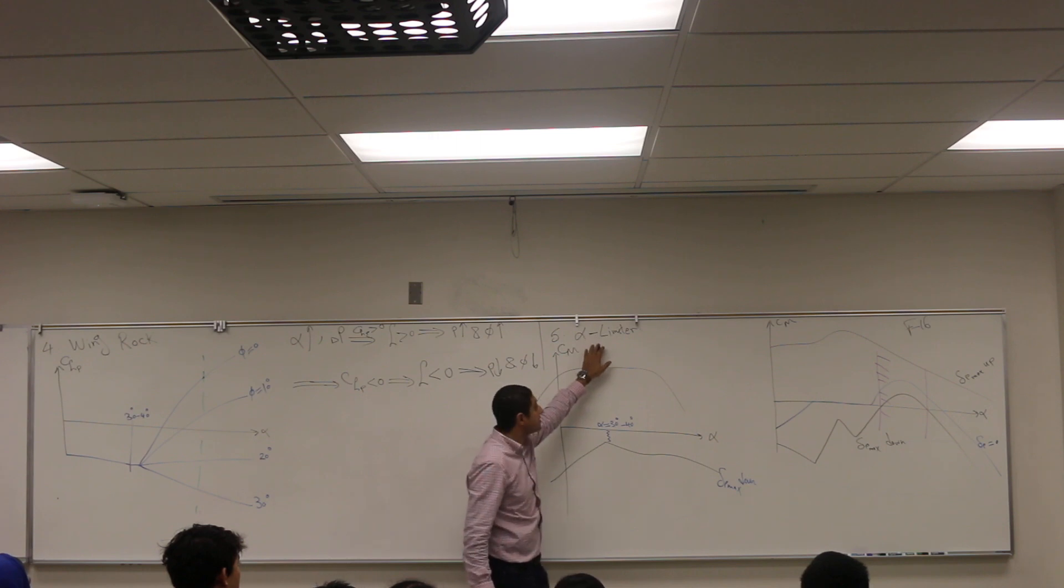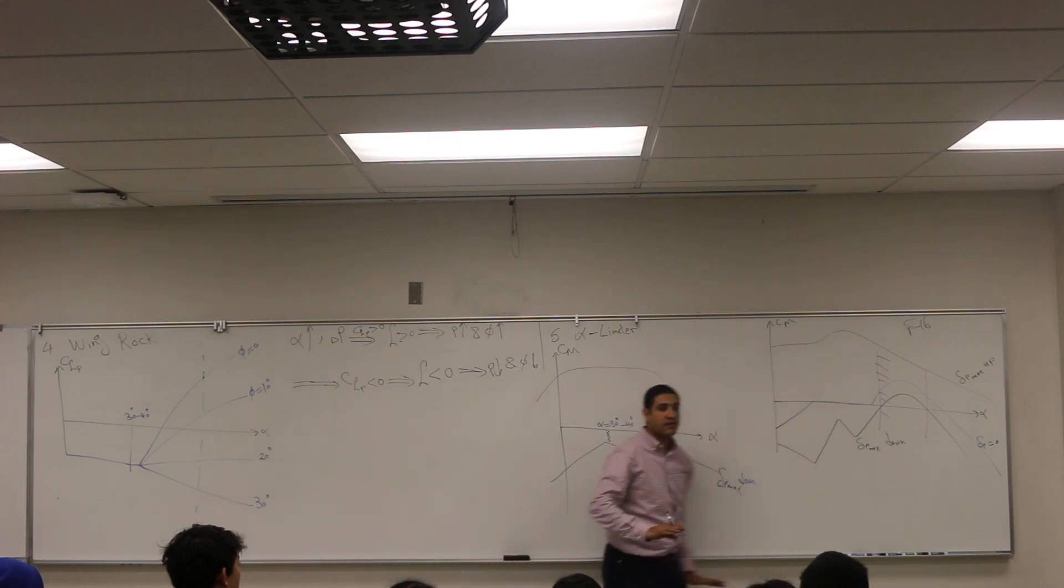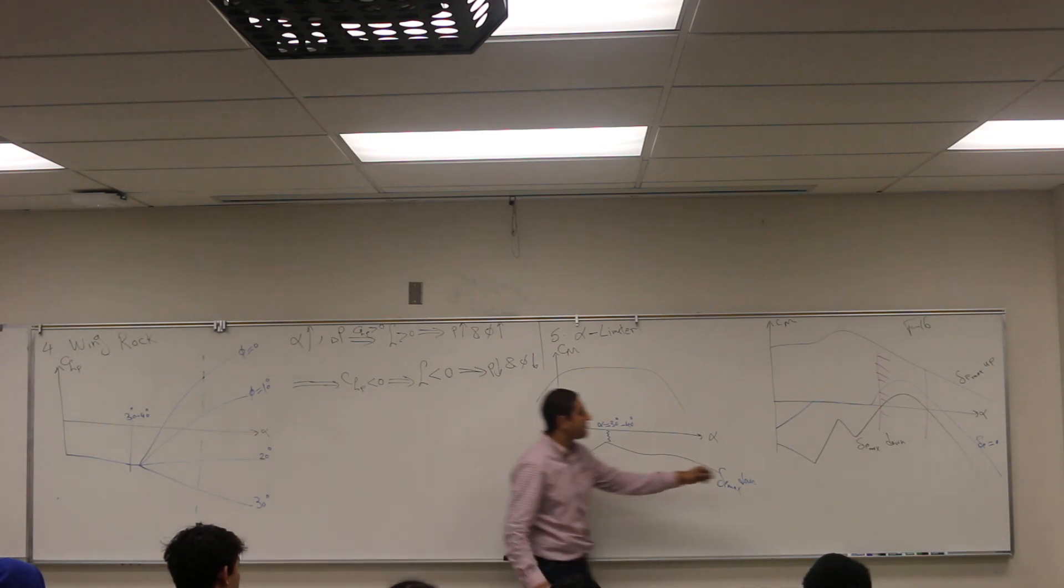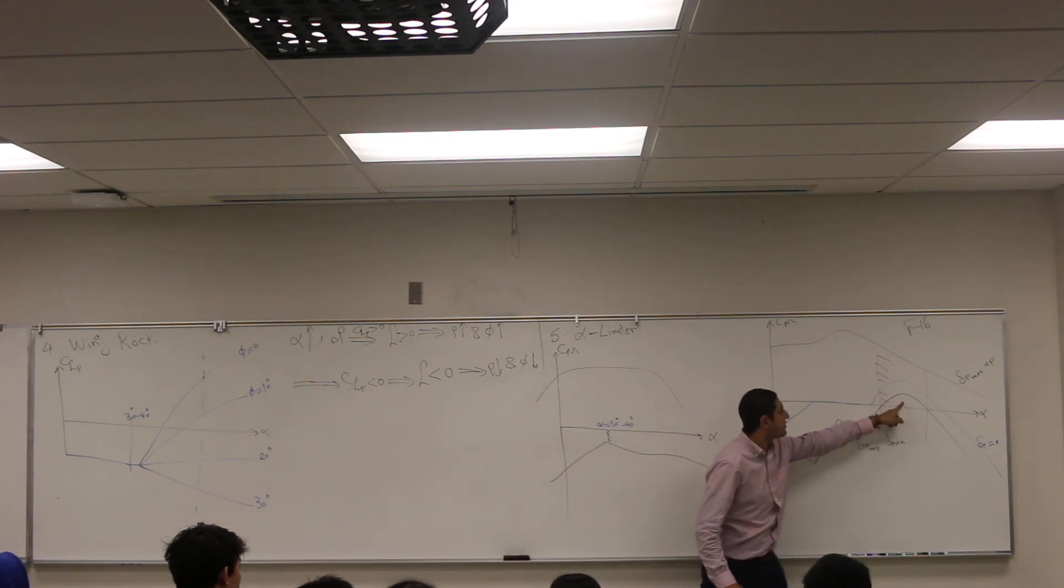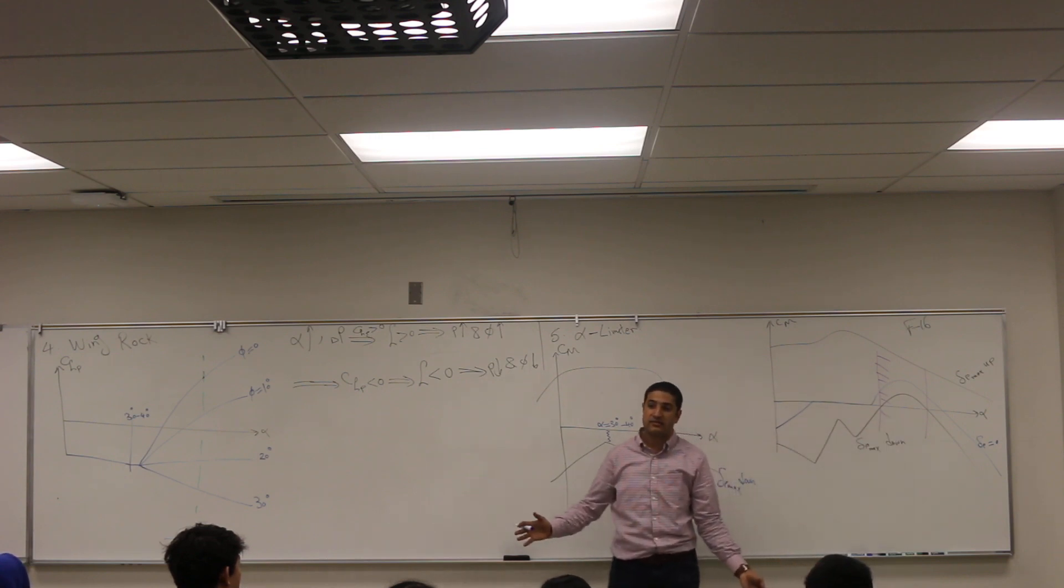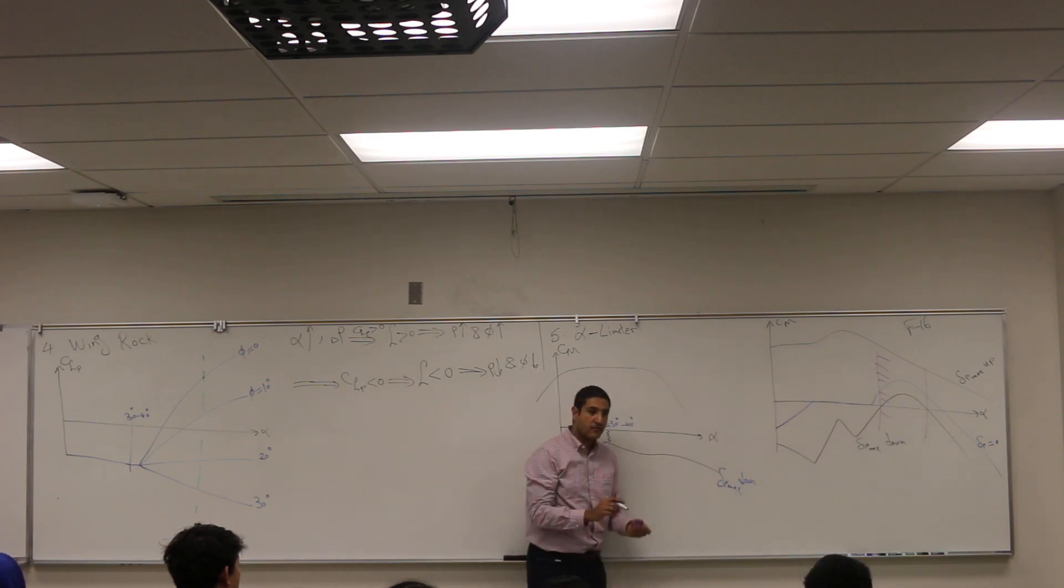To my knowledge, it is the only airplane, or the most famous airplane, that has an alpha limiter. It cannot exceed certain alpha. The autopilot will just prevent the pilot from doing it because you cannot fly here. There is no achievable negative pitching moment. Any slight change in the pitching moment positive, you cannot trim for that, you cannot compensate, you'll just keep going.